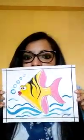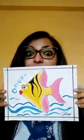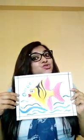Now what is this? This is an angel fish. It stays deep under the sea. So what is the shape of this fish? Triangle. The shape of this fish is triangle.